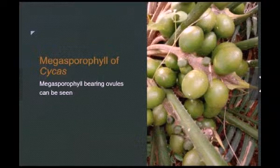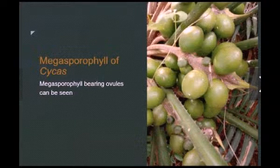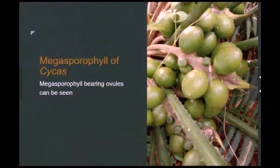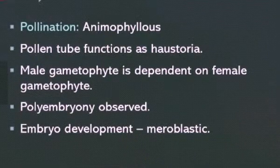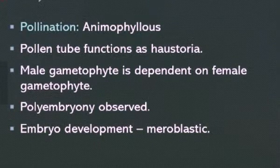Here we can see the megasporophylls of Cycas with ovules. The green colored structures are ovules and the light brown structure is the megasporophyll. The ovules are borne on megasporophylls. In Cycas, there is no formation of a cone; rather, the megasporophyll is inserted in between the foliage leaves.